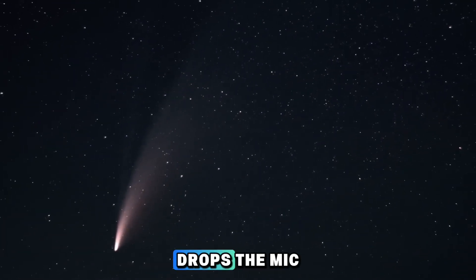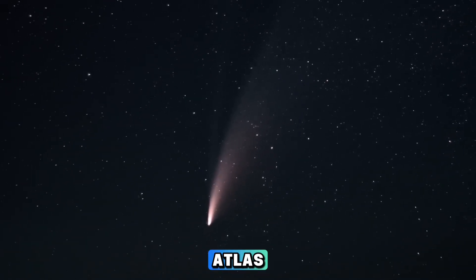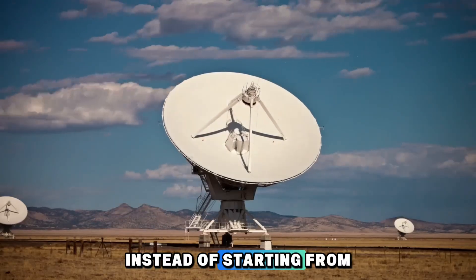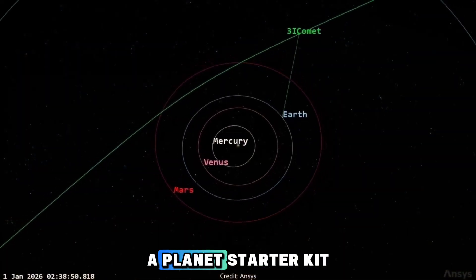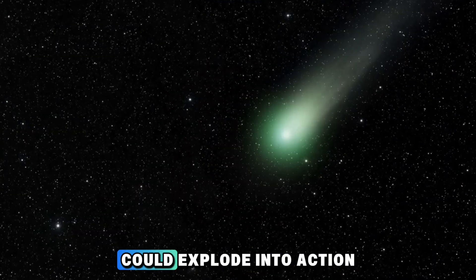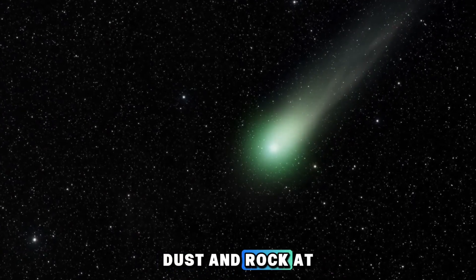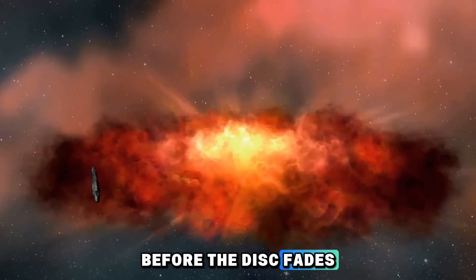That's where Nairs' theory drops the mic. She suggests that interstellar objects like 3I Atlas might crash into these young systems, acting as ready-made cores. Instead of starting from dust, the disk suddenly has a solid foundation, a planet starter kit falling right out of the galaxy. From there, the process could explode into action. The seed starts pulling in gas, dust, and rock at lightning speed, snowballing into a planet before the disk fades away.